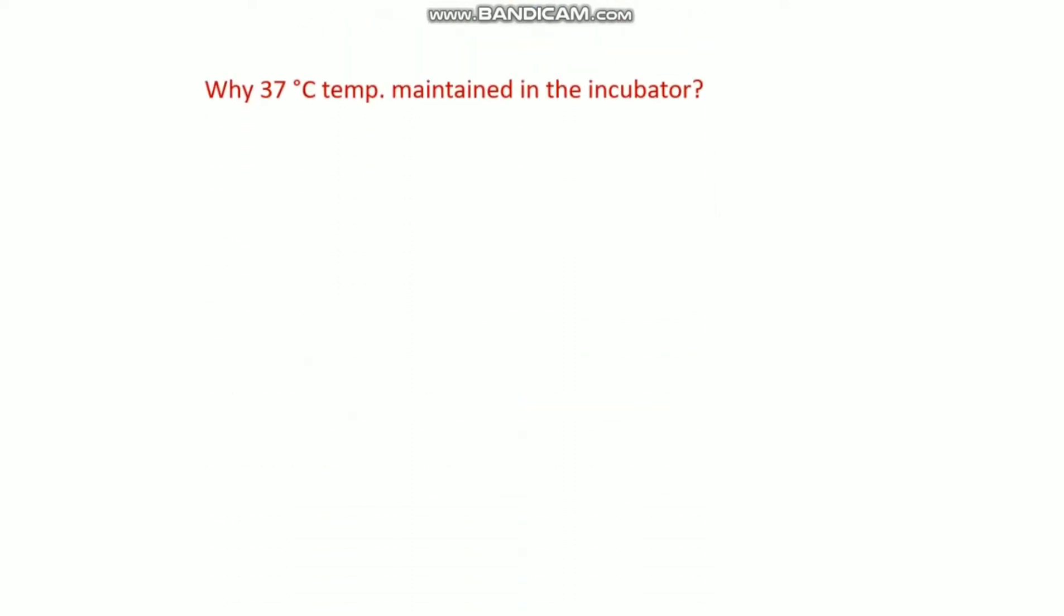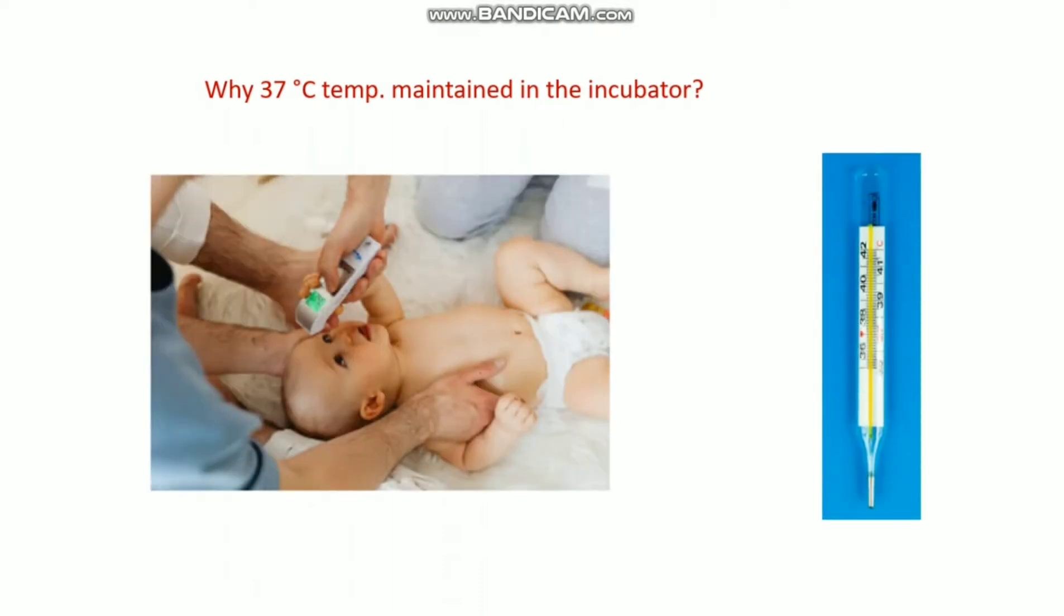First let's talk about why 37 degree temperature is maintained in the incubator. This is very simple. All of the mammalian cells and most living organism cells require 37 degree temperature to grow. This is why this temperature is maintained in the incubator to grow the cells properly.